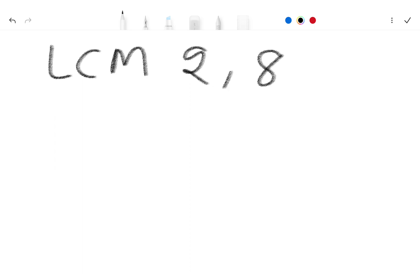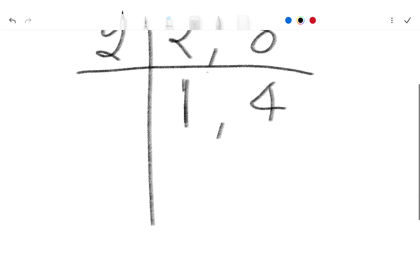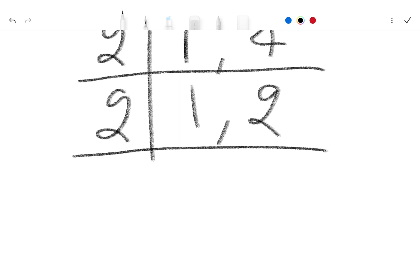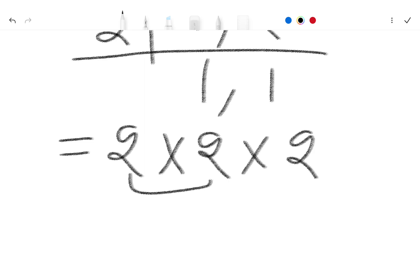In this video we find LCM of 2 and 8. We use the divide method: write 2 and 8, divide by 2 — 2 gives 1 and 8 gives 4. Again divide by 2 — 1 stays as is and 4 gives 2. Again divide by 2 — gives 1 and 1. Now we have factors 2 × 2 × 2, so 2 gives 4 and 4 gives 8.